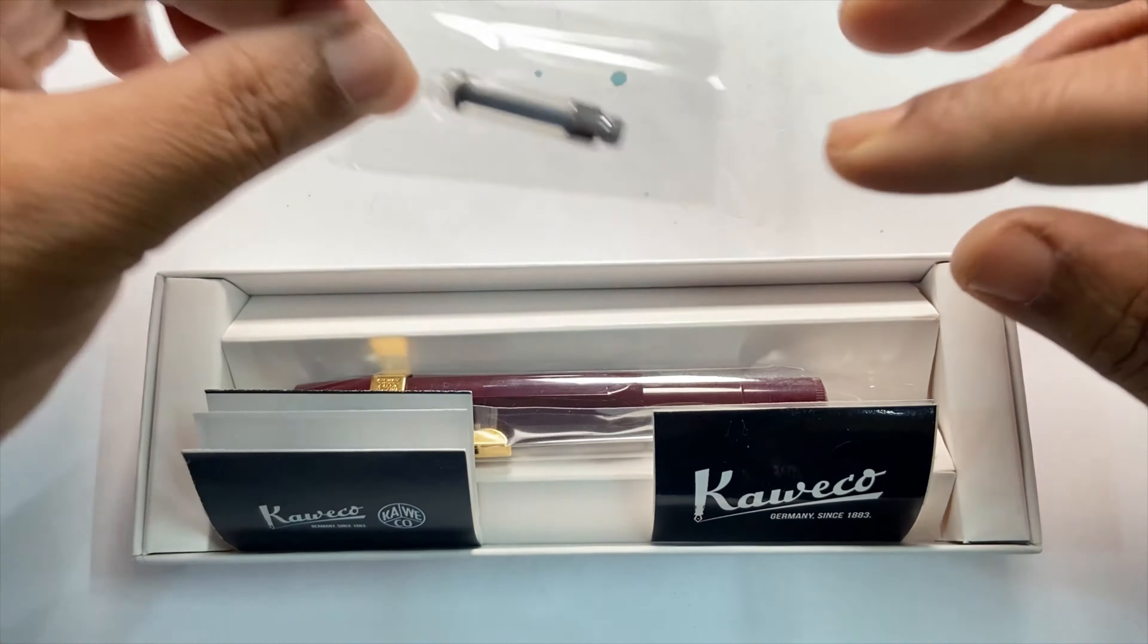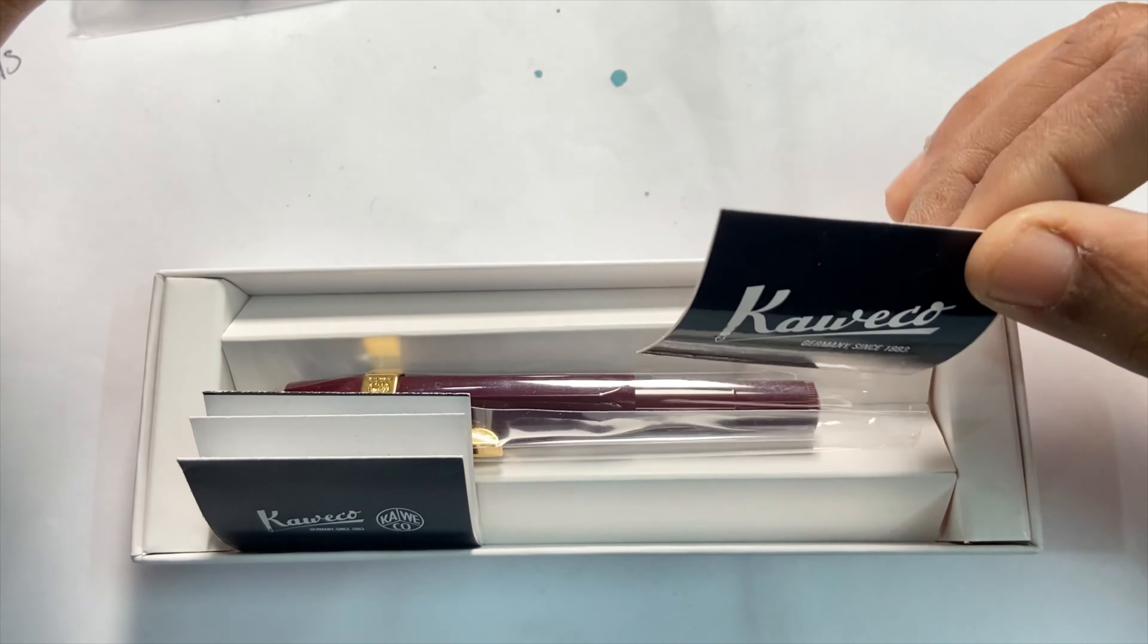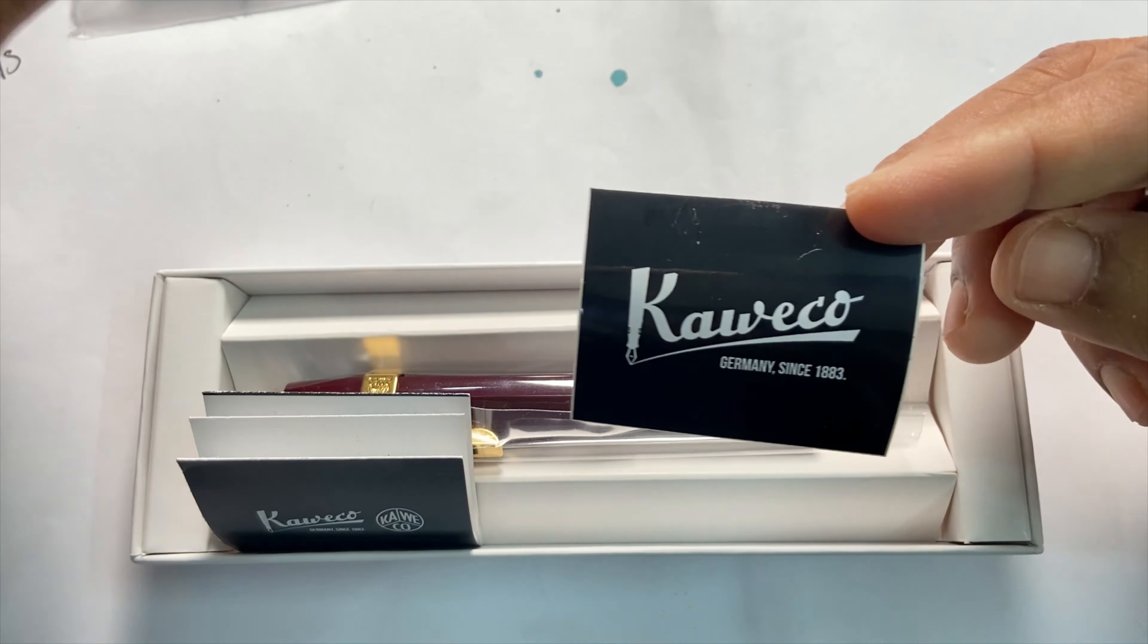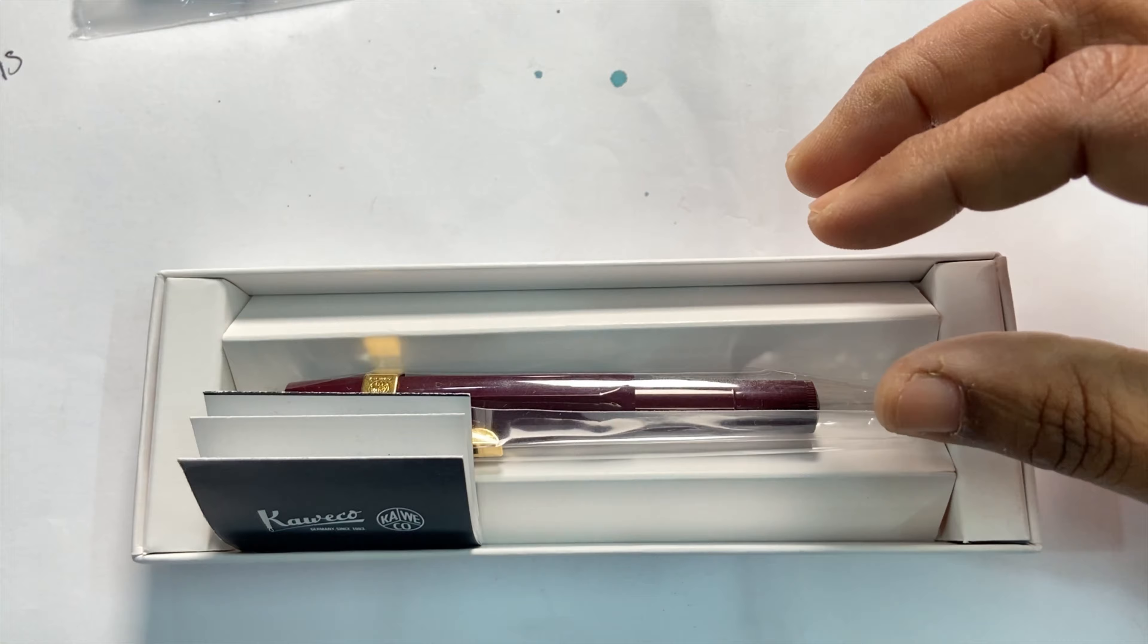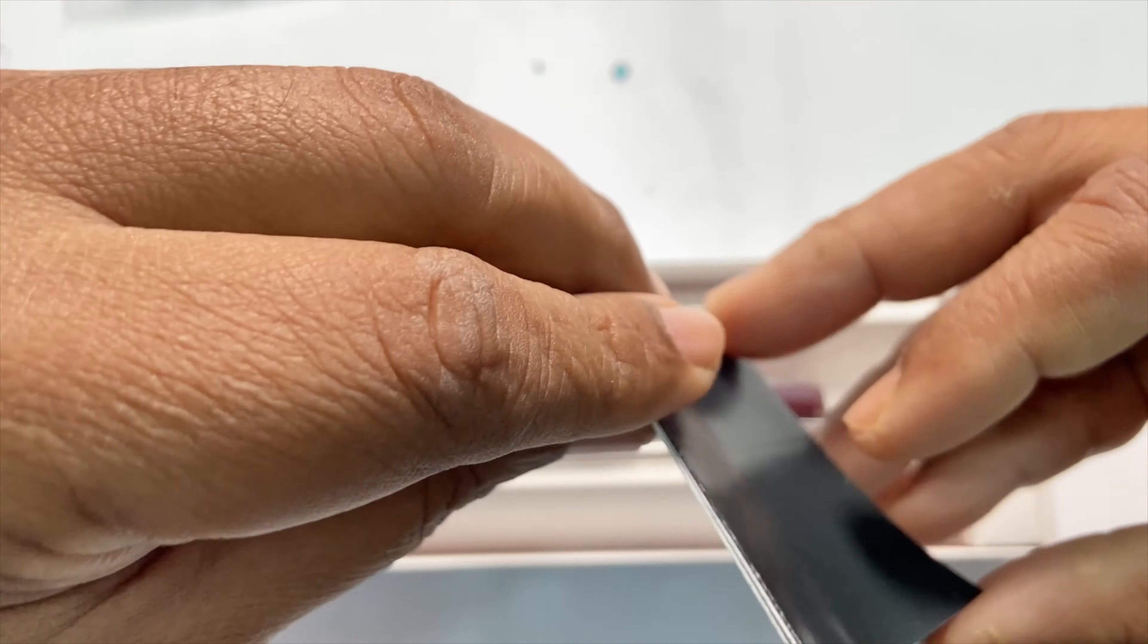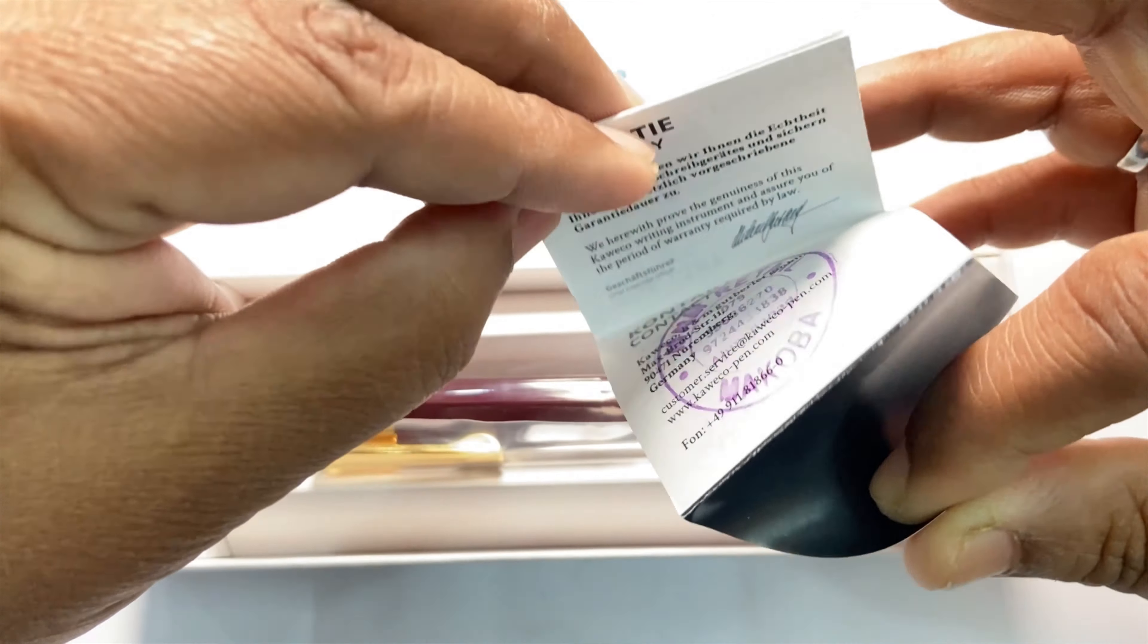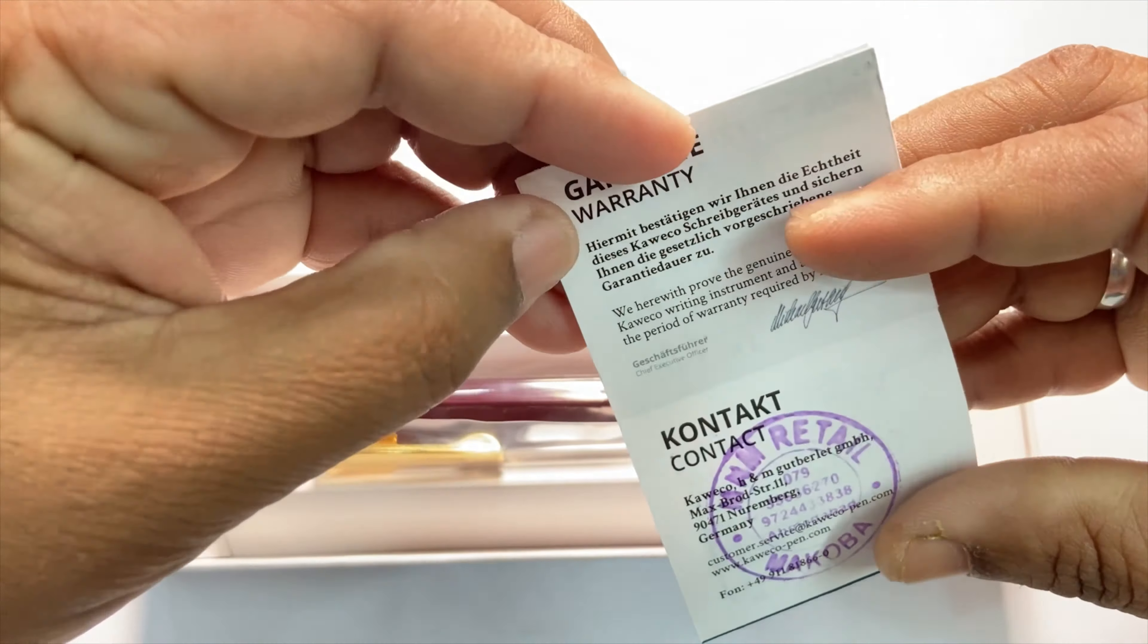I'll be putting this onto the pen and inking it up for the writing sample. The box contains a sticker like this and a care guide with warranty information, so let me keep it aside. And this is the pen.